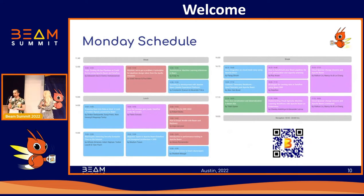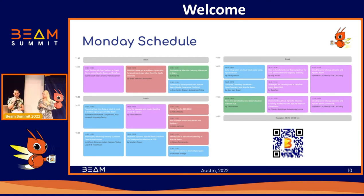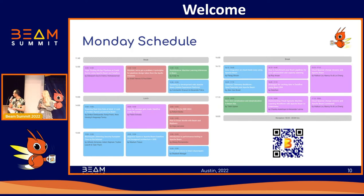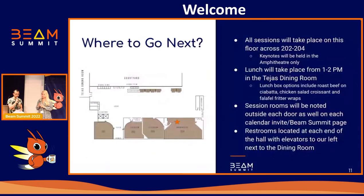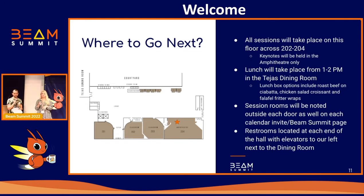So this is our schedule. For both Monday and Tuesday, we'll have keynotes in the morning, and then we'll split into three rooms. You can get the full program there, or also on our website, 2022.beamsummit.org. As Pablo stated, we will have our sessions taking place outside this hallway in rooms 202 to 204 all week. Each room will also have a schedule placed outside, so you can take a look at that or find it on the Beam Summit site.